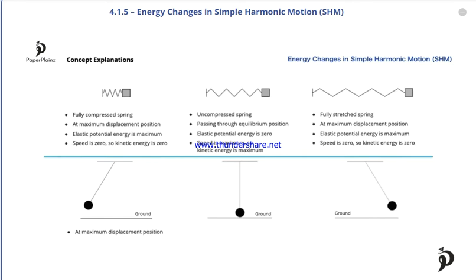Because of this, the gravitational potential energy of the pendulum bob is at its maximum. If you picture the motion of the pendulum, you can see that at this point it stops for a moment. This means that its speed is zero, therefore its kinetic energy is also zero.